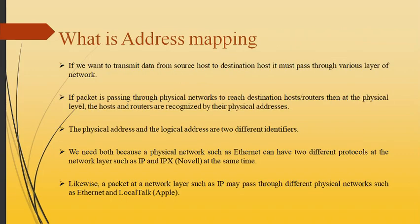Now let's concentrate on what is address mapping. If we want to transmit data from source host to destination host, it must pass through various layers of network. If the network is passing through a physical network to reach the destination host, then at the physical level the host and router are recognized by their physical addresses. The physical address and the logical addresses are two different identifiers. We need both because a physical network such as Ethernet can have two different protocols at the network layer, such as IP and IPX, at the same time.